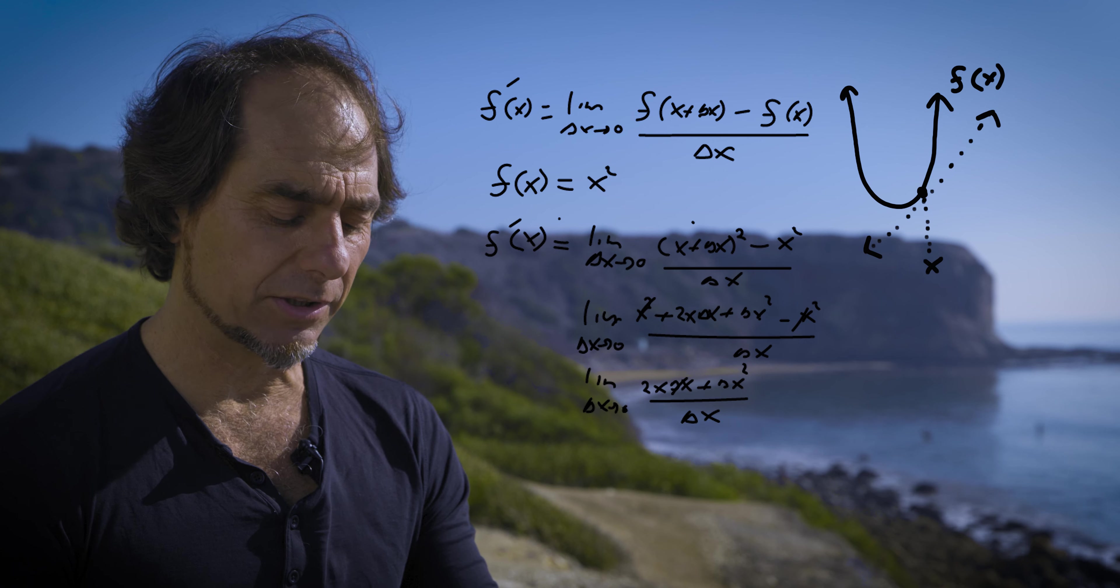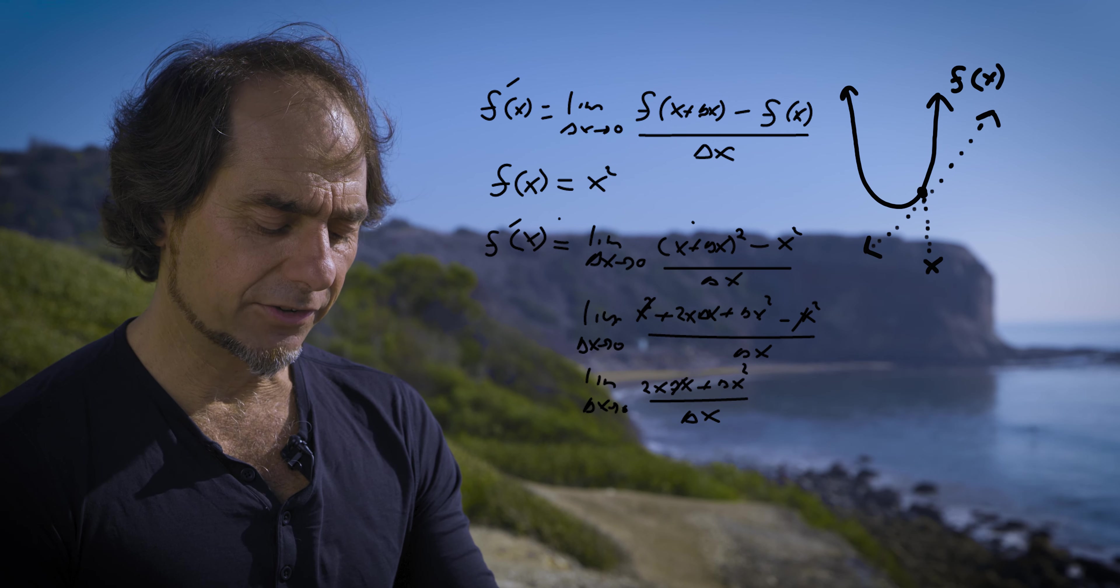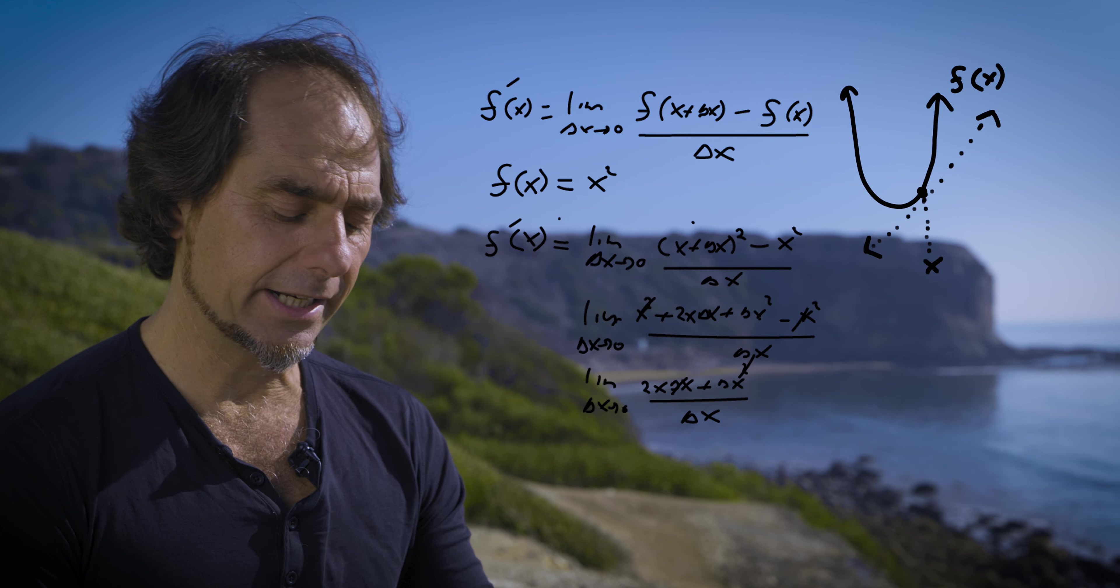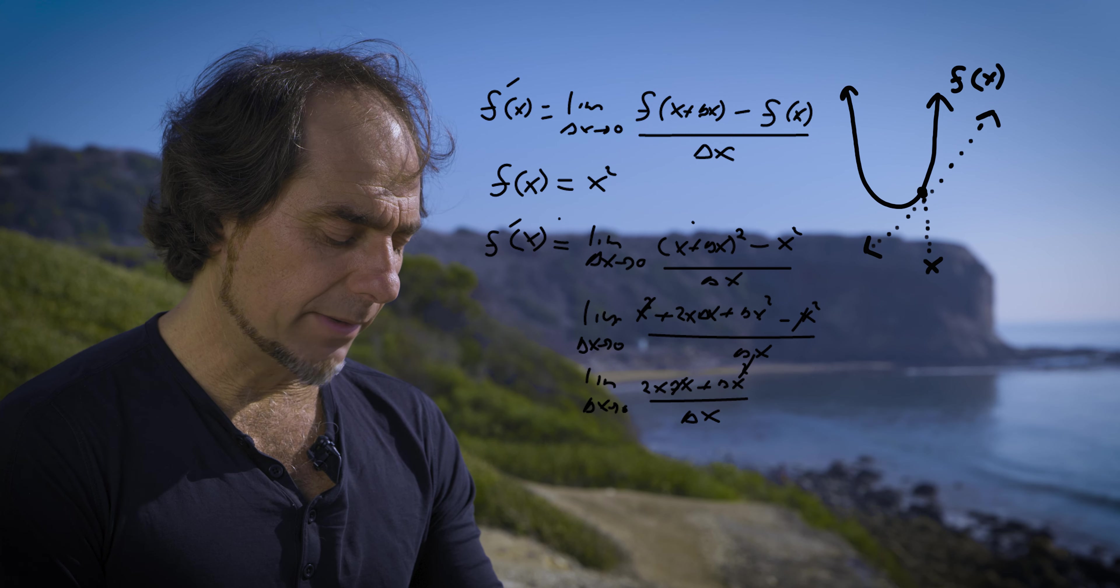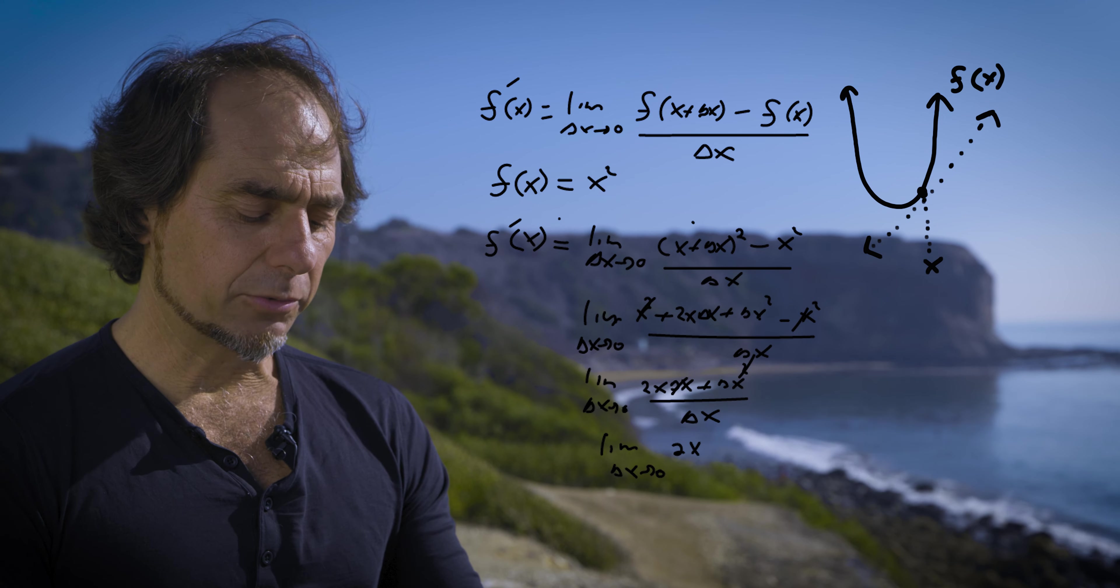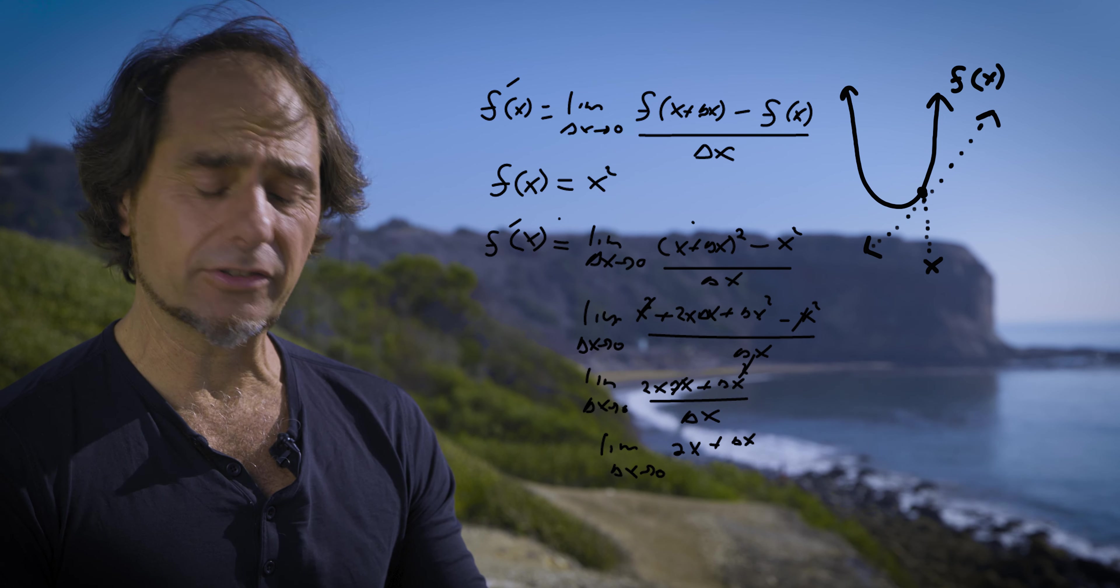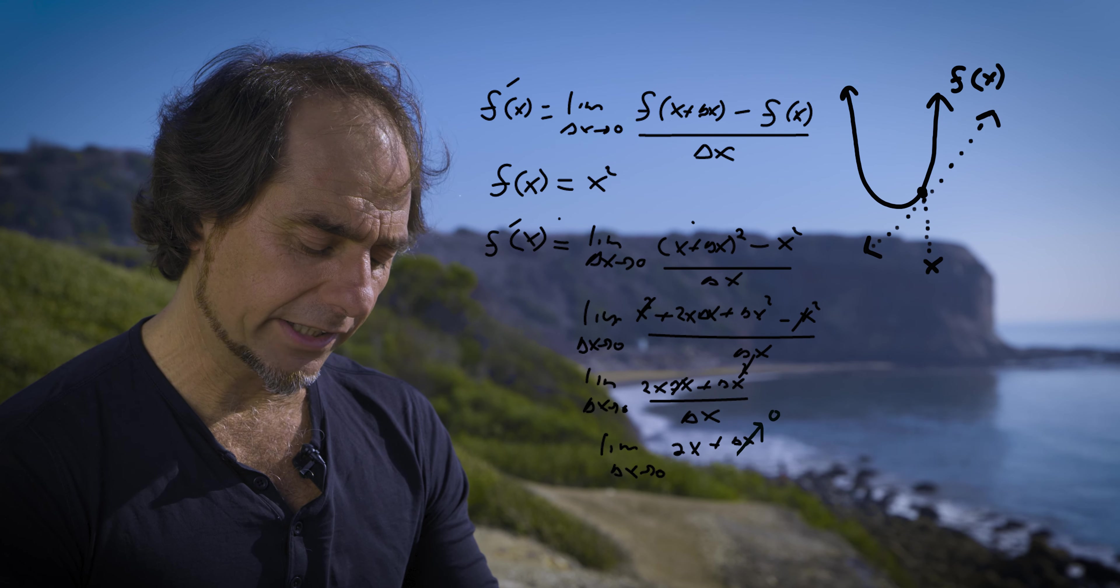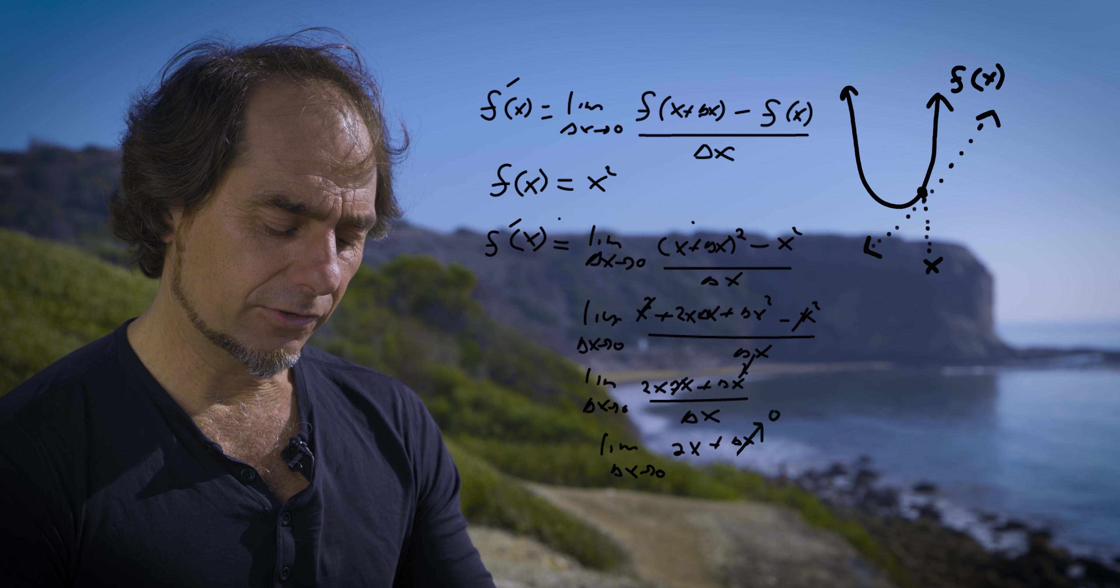We can do a little cancellation between these terms. I kill this delta x with delta x and it also kills one delta x right here. I still have to do my limit and then we're just about done. So I'm left with 2x plus delta x. If I take the limit as delta x goes to zero, this goes to zero and I'm left with 2x.